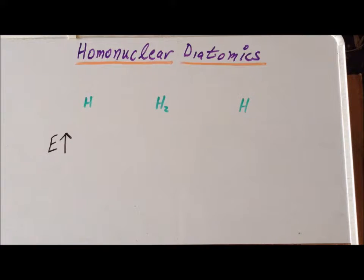Hello. In this video, we are going to sketch out the molecular orbitals for the homonuclear diatomic molecules and ions of the first row of the periodic table.